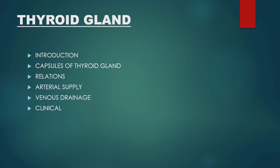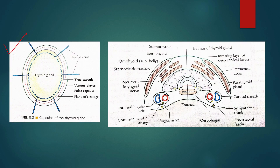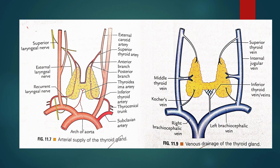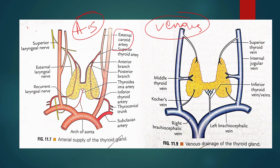Next, we have the thyroid gland. As already mentioned while explaining the submandibular gland, in the thyroid gland we will similarly give the introductory part, its capsule, its relations, nerve supply, arterial supply, and venous drainage. For arterial supply: the external carotid artery gives the superior thyroid artery with anterior and posterior branches, and we also have the inferior thyroid artery. Just the name and this diagram is sufficient to earn you marks.